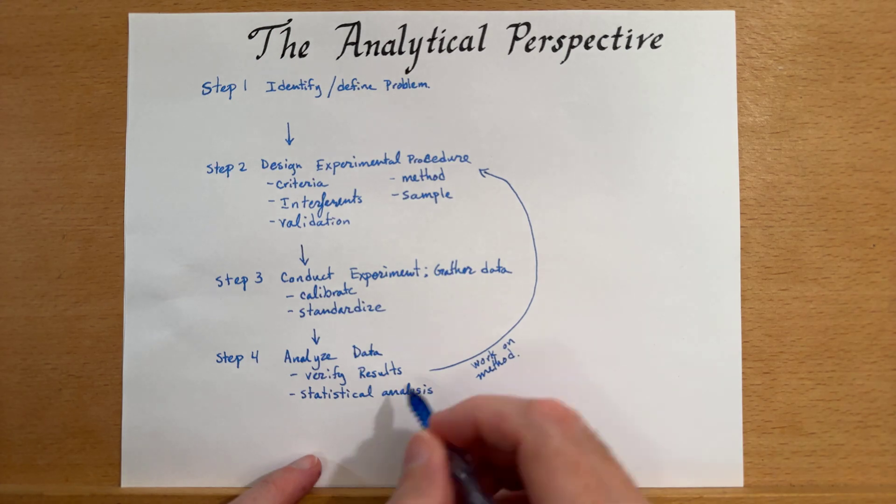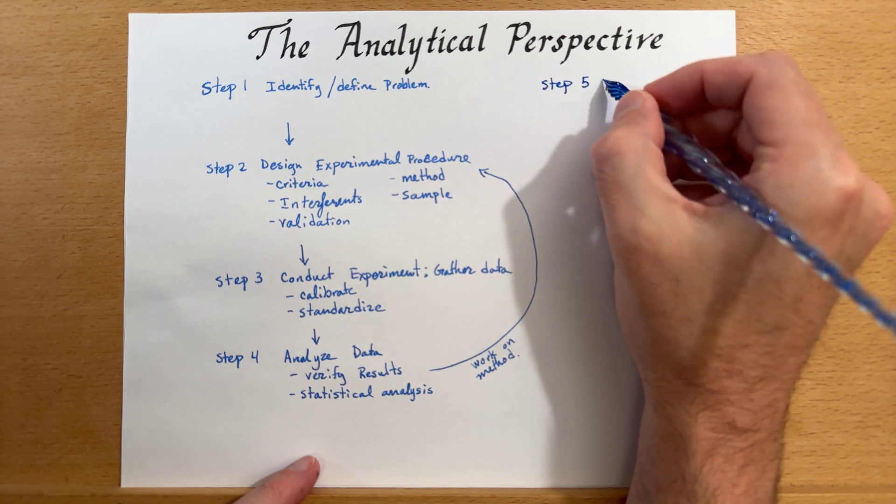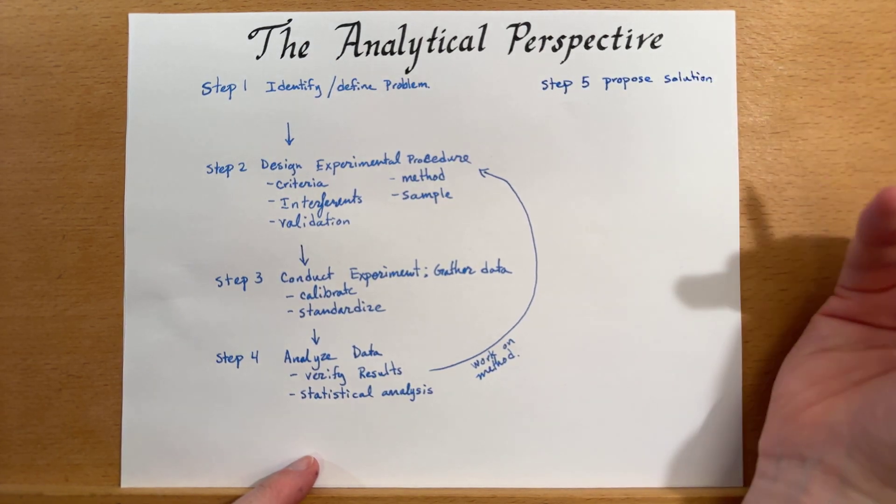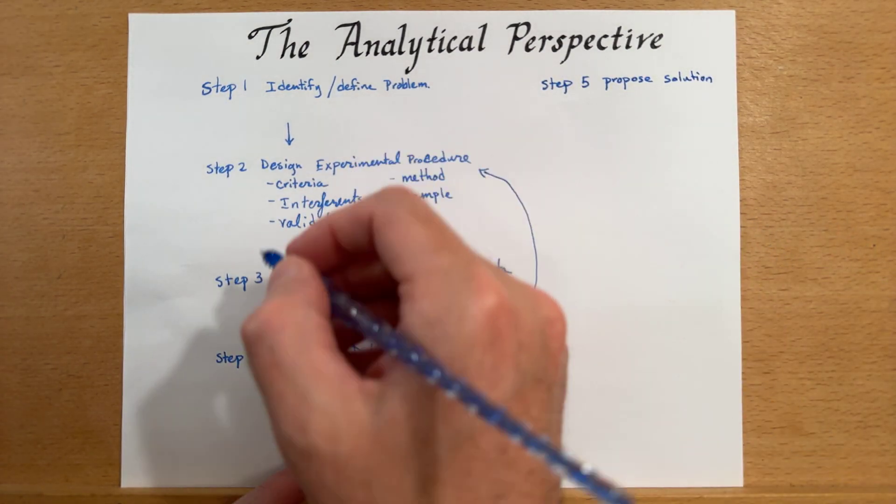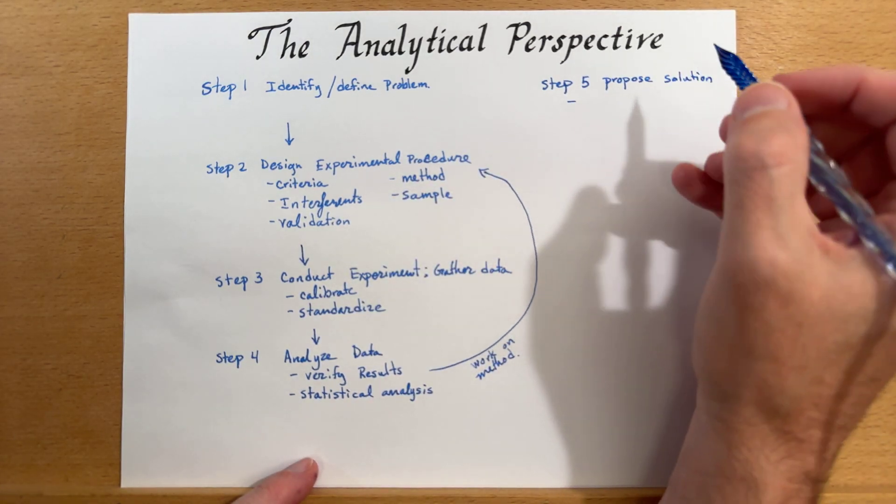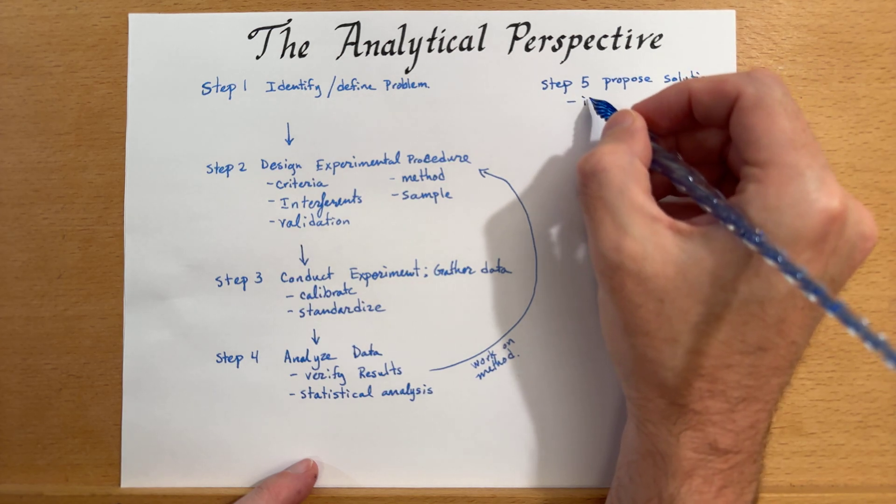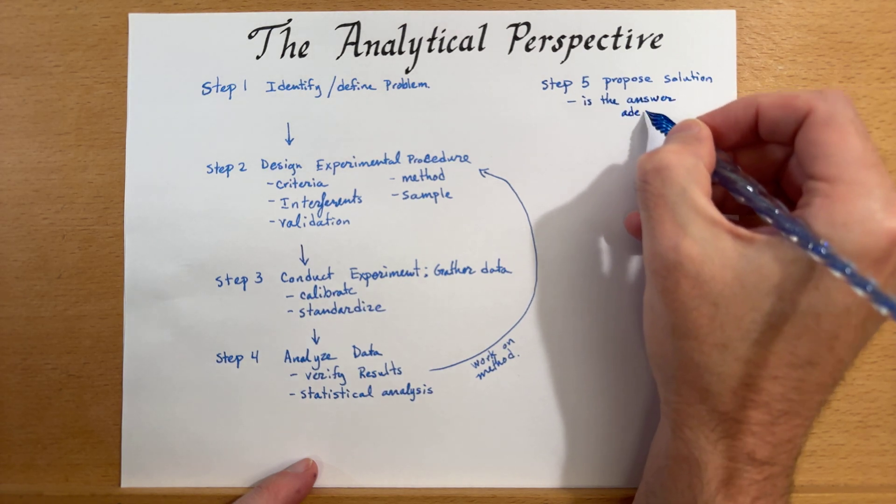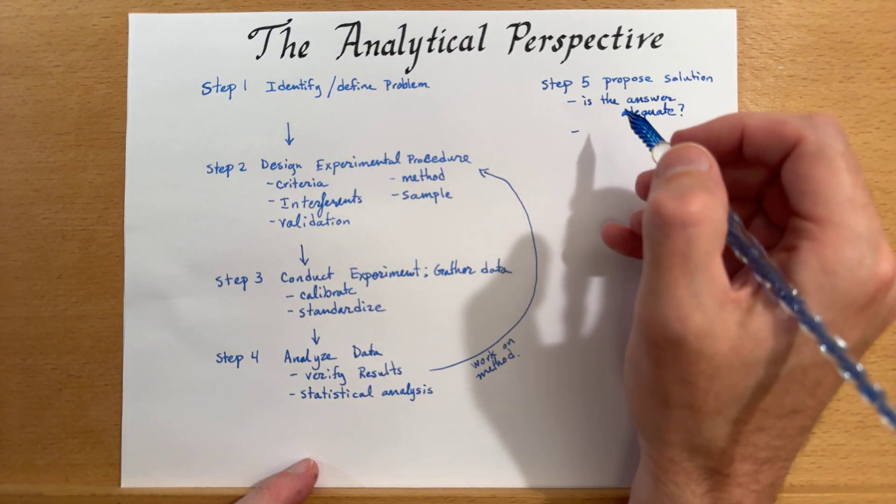Which is the last step. And I'll write it over here. In step five, we're going to propose a solution. Once we've completed what we're doing here in steps two to four. Once we do that, we're going to ask ourselves a couple more questions. Is the answer adequate? And have we discovered any new problems?